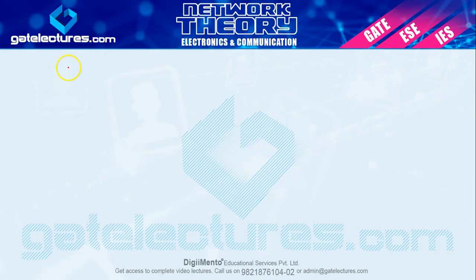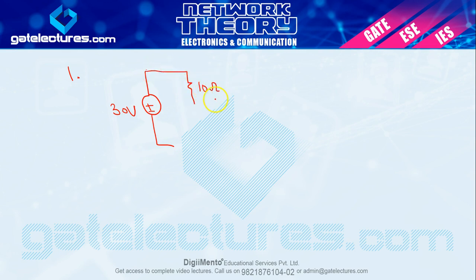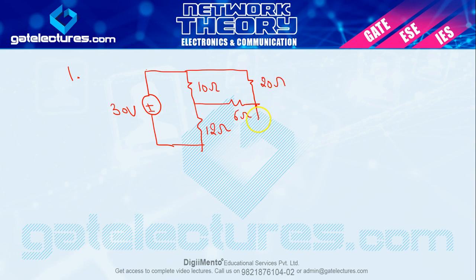The first numerical has a voltage source of 30 volts, a resistor of 10 ohm, another resistor of 12 ohm, a resistor of 6 ohm, a resistor of 20 ohm, and a dependent current-dependent voltage source 4I₀. We need to find out I₀.